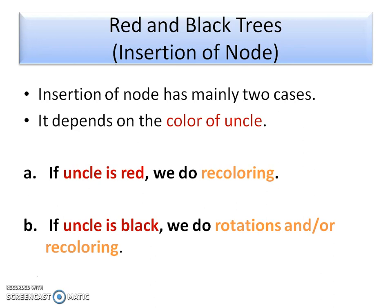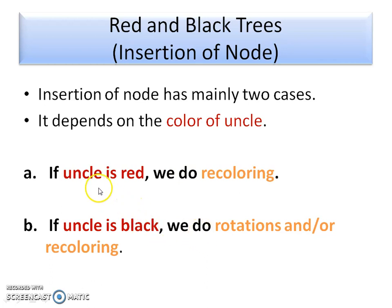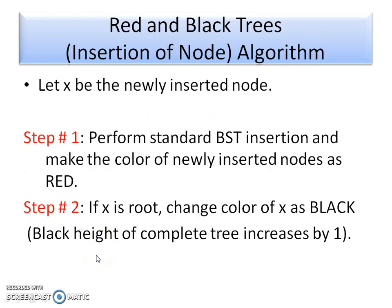Insertion of a node has mainly two cases, and these two cases always depend on the color of the uncle. Why two cases? Because in a Red-Black tree every node is either red or black — that's why two cases. The first case is if the uncle is red and the second is if the uncle is black. If the uncle color is red then we need to do recoloring, and if the uncle's color is black we need to do rotation first and recoloring if needed.